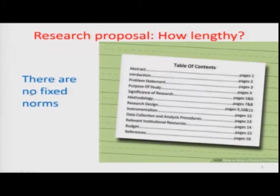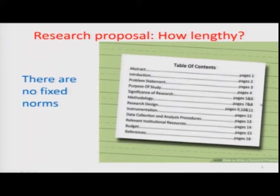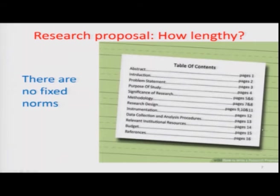Once you know what is to be covered in a research proposal, the next issue is how lengthy it should be. As a guideline: abstract in one page, introduction in one page, problem statement in one page, purpose of study in one page, significance of research may take two pages, methodology two pages, design three pages, instrumentation one page, data collection and analysis procedures, sampling, relevant institutional resources, analysis, budget, and references.